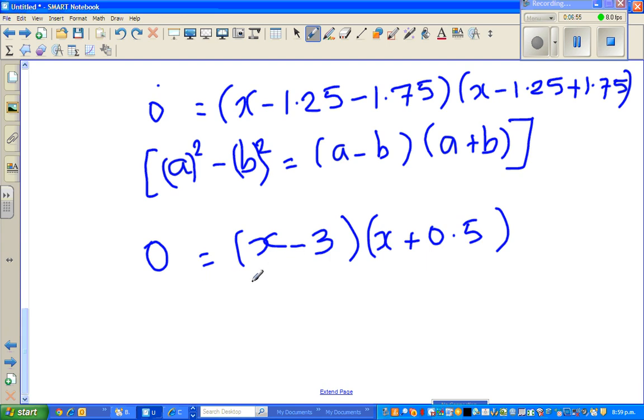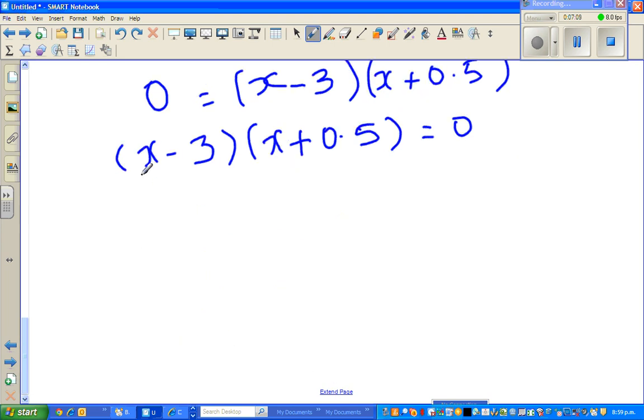So the same principle. Let me rewrite this. So this is x minus 3 bracket x plus 0.5 is equal to 0. So you have to now think, when would this become 0? When would, let me use a different color. I'm going to say, when would this become 0? And when would this become 0? So I can say x would be 3, or x has to be negative 0.5.